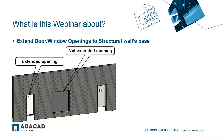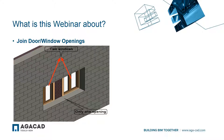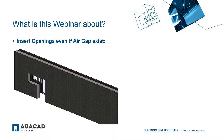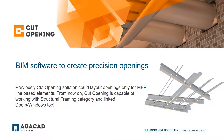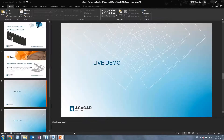Today we're going to cover three main features developed over the past few months. The first is extending door/window openings to the structural wall base — extending the opening to the bottom of the structural opening. The second is joining door/window openings into one bigger opening. The third is inserting openings even when an air gap exists between the architectural wall and the structural wall. We'll be using the Cut Opening software, which was originally made for MEP line-based elements and now supports structural framing and linked doors and windows too.